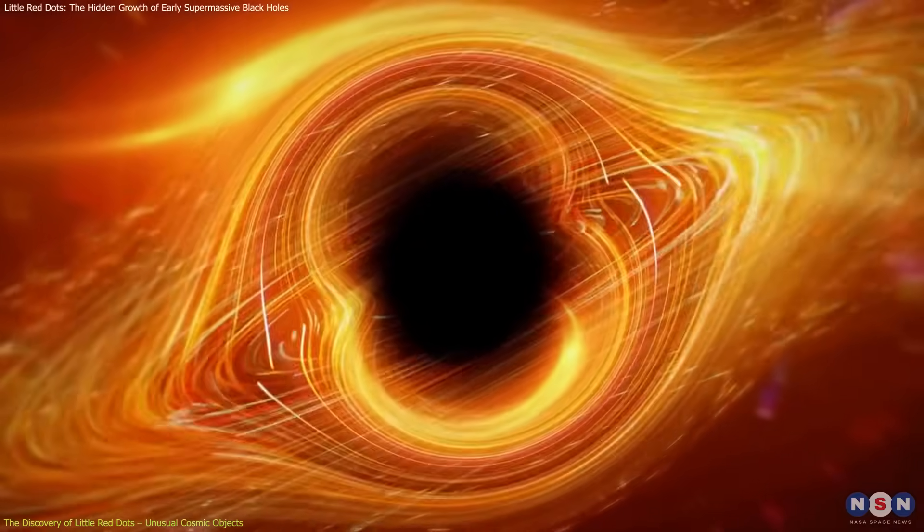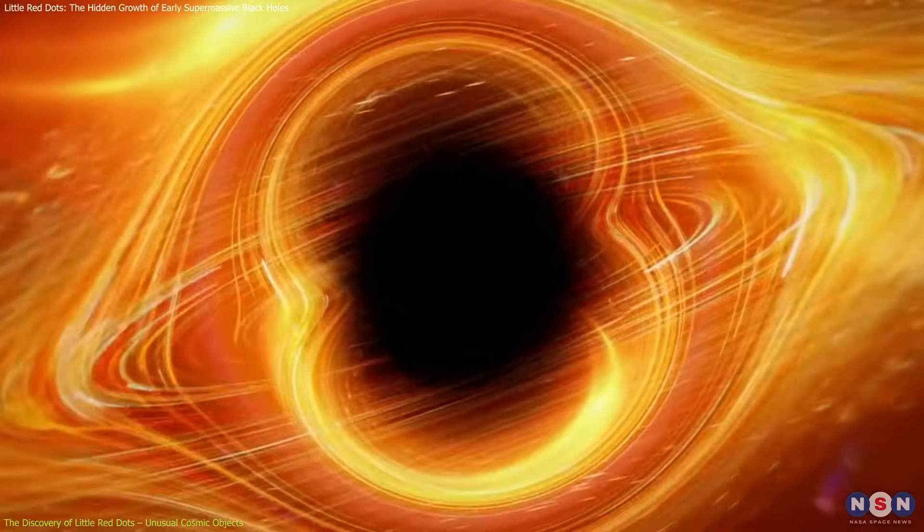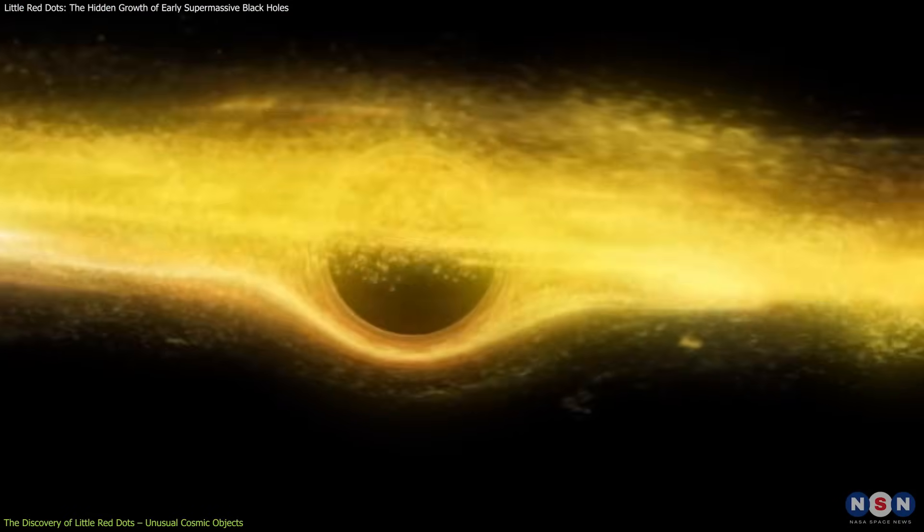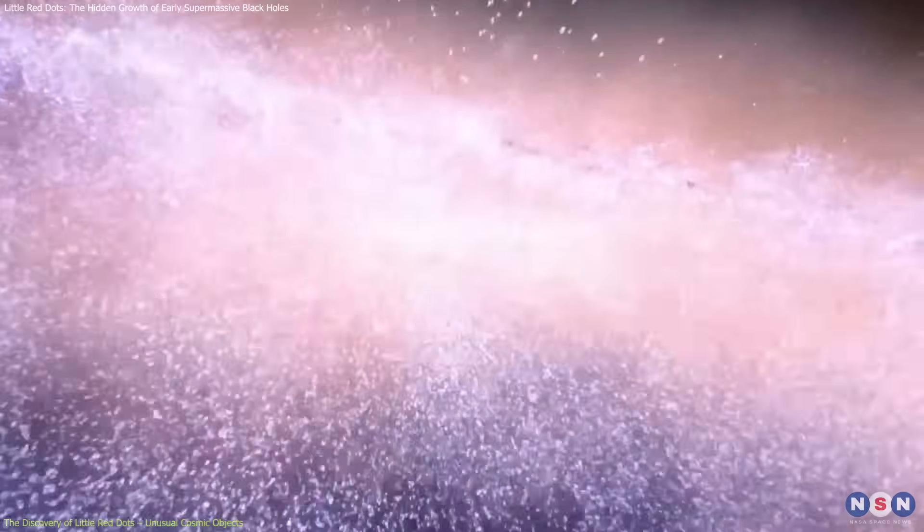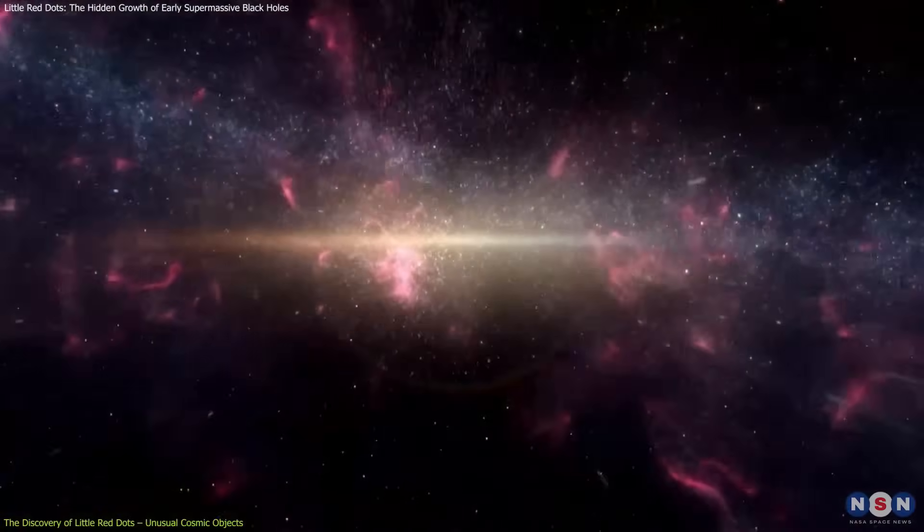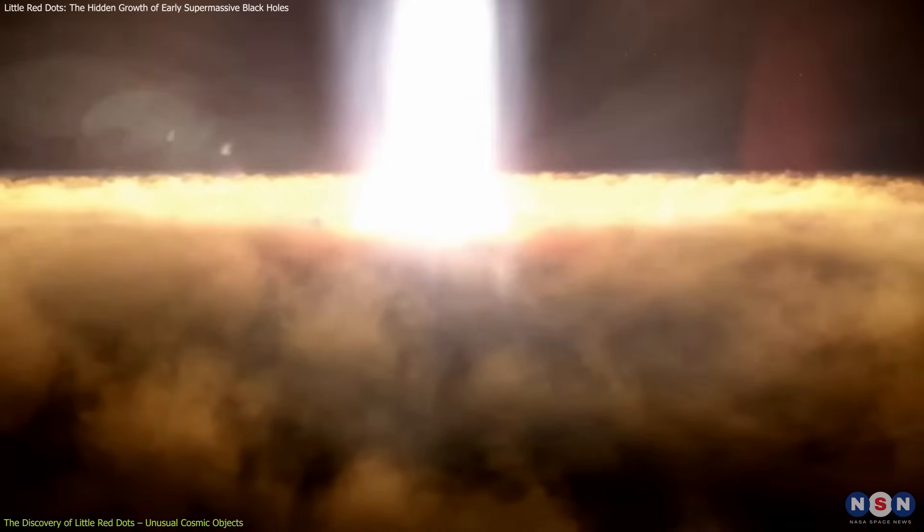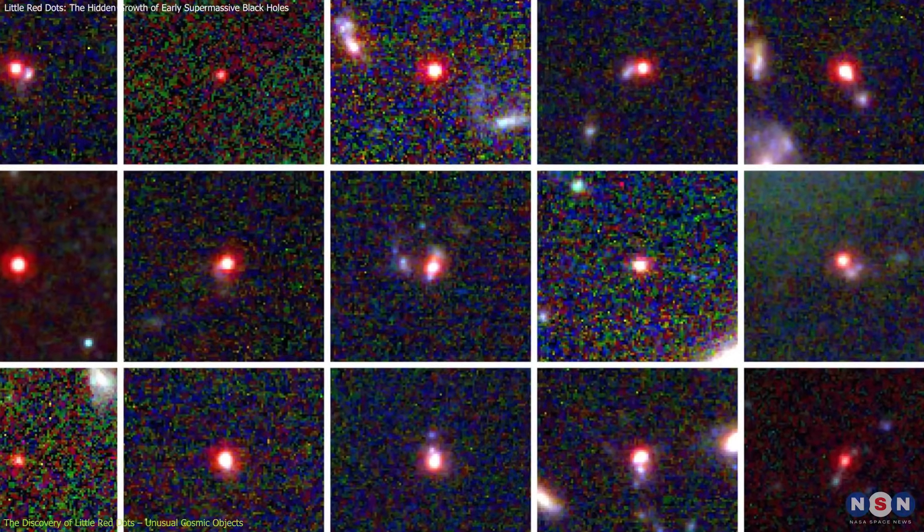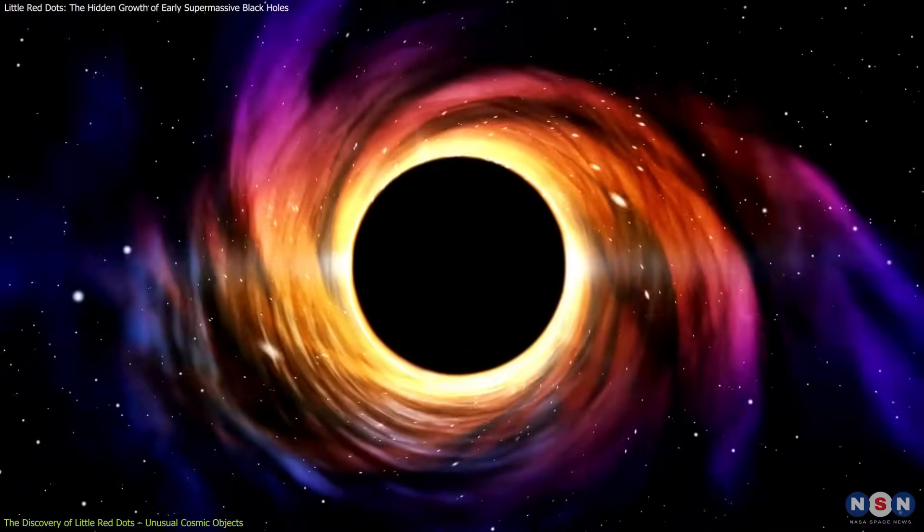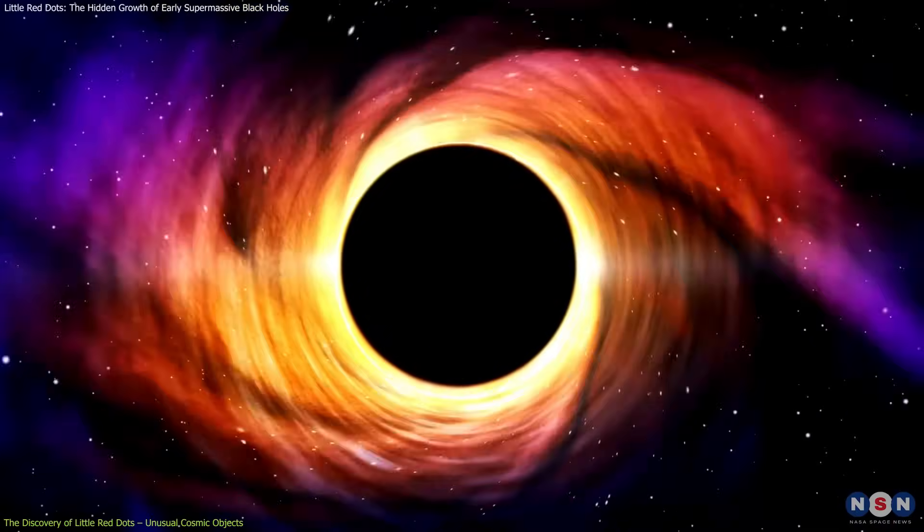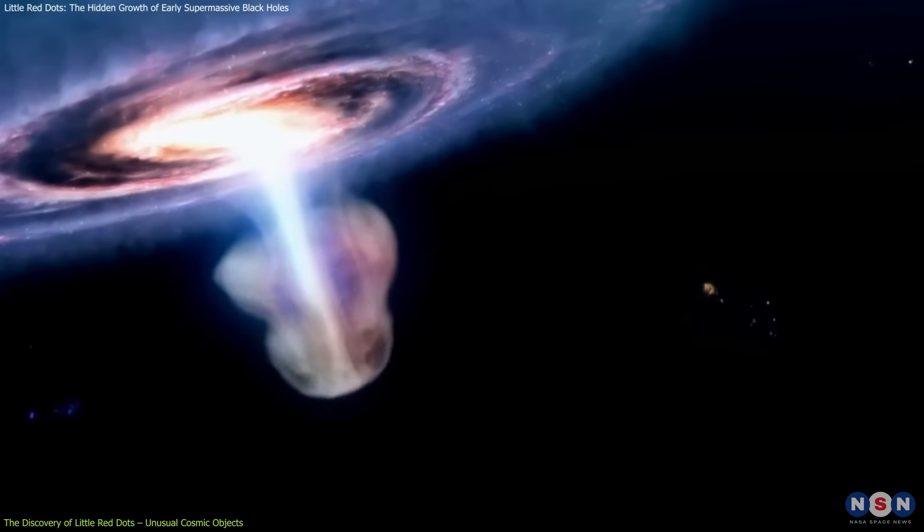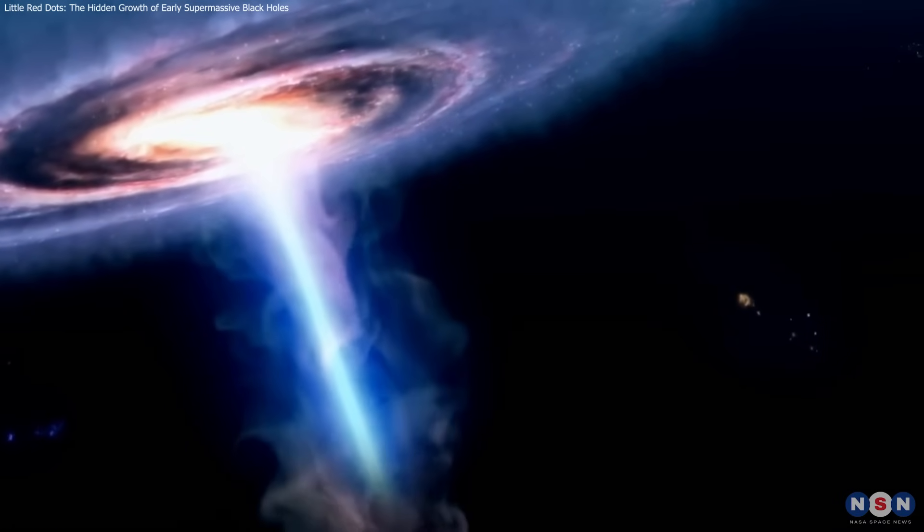The model suggests that LRDs contain black holes with rapidly spinning accretion disks, consuming matter at extreme rates. If the surrounding ionized gas cloud is dense enough to block high-energy emissions, the black hole must generate an enormous amount of energy to make the LRDs visible in red and infrared light. This could mean that these black holes are accreting matter at close to the Eddington limit, the maximum rate before radiation pressure would push incoming material away.